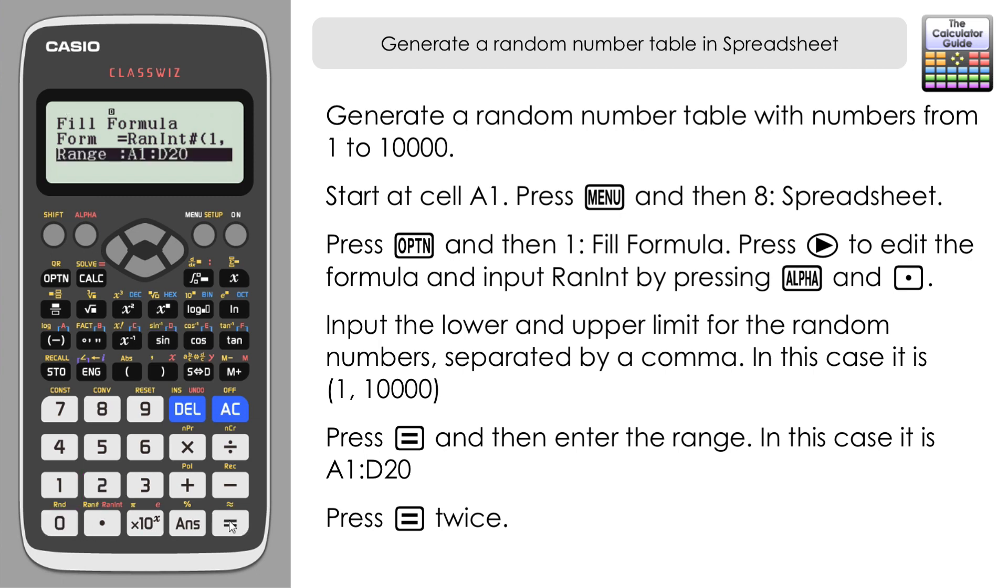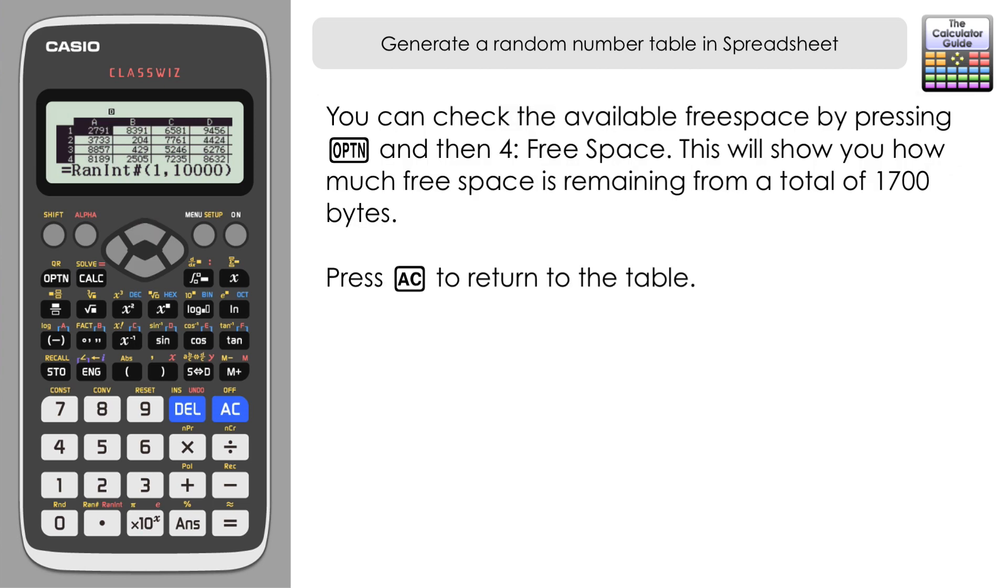Here we have a new random number table which has generated numbers from 1 to 10,000. Now if you're interested in how much free space is available, you can check that if you go to Option and then 4.